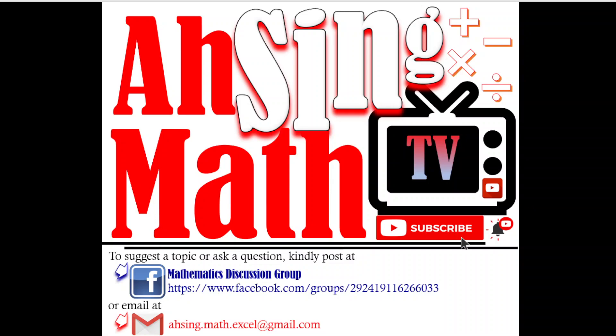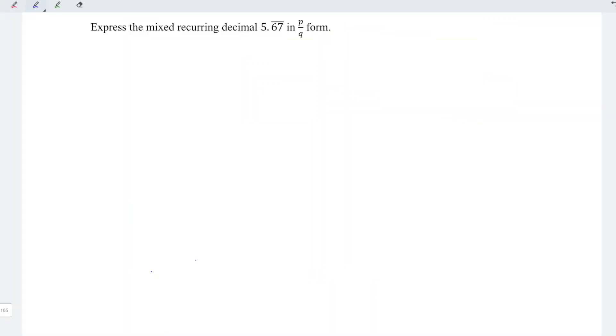Hi, this is AXING. You are now watching AXING MAD TV. Today I would like to share how to express a mixed recurring decimal in the form of an improper fraction. Let's rewrite the decimal number 5.67̅ where the repeating numbers are 6 and 7.